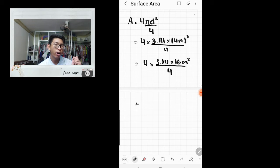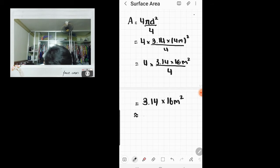Now we can cancel 4 and 4, right? So let's go ahead and do that. We would be left with 3.14 times 16 meters squared. When we times these together, we'll get approximately 50.2 meters squared. So the surface area for this sphere is 50.2 meters squared.